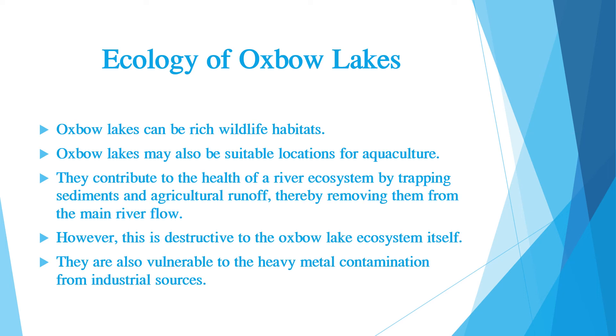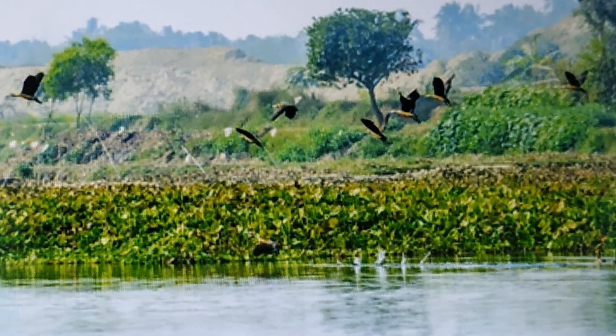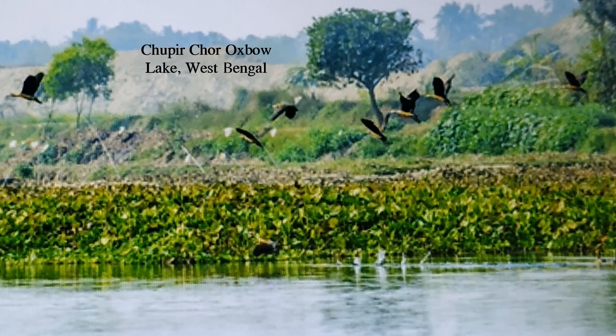Oxbow lakes are also vulnerable to heavy metal contamination from industrial sources. Look at this oxbow lake — this is Chopit Chor oxbow lake in West Bengal. This is a very rich wildlife habitat. A flock of cormorant migratory birds flying in the wetland of Chopit Chor oxbow lake, which is created by the rivers Damodar and Ganga in the Gangetic Plain at Purbasthali Bird Watching Place, West Bengal.